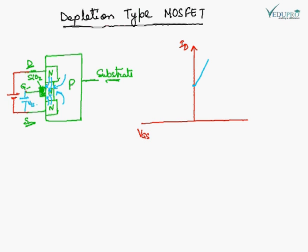The current ID is going to increase this way. Now I disconnect this battery and connect another battery. The polarity of this battery will be negative upper.